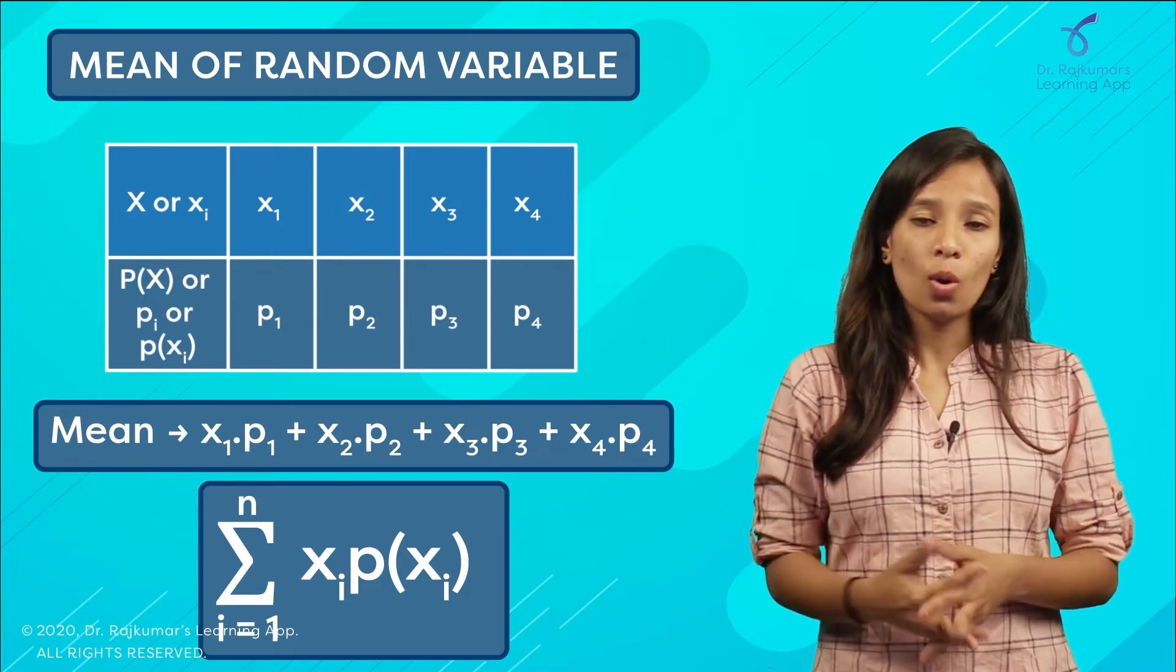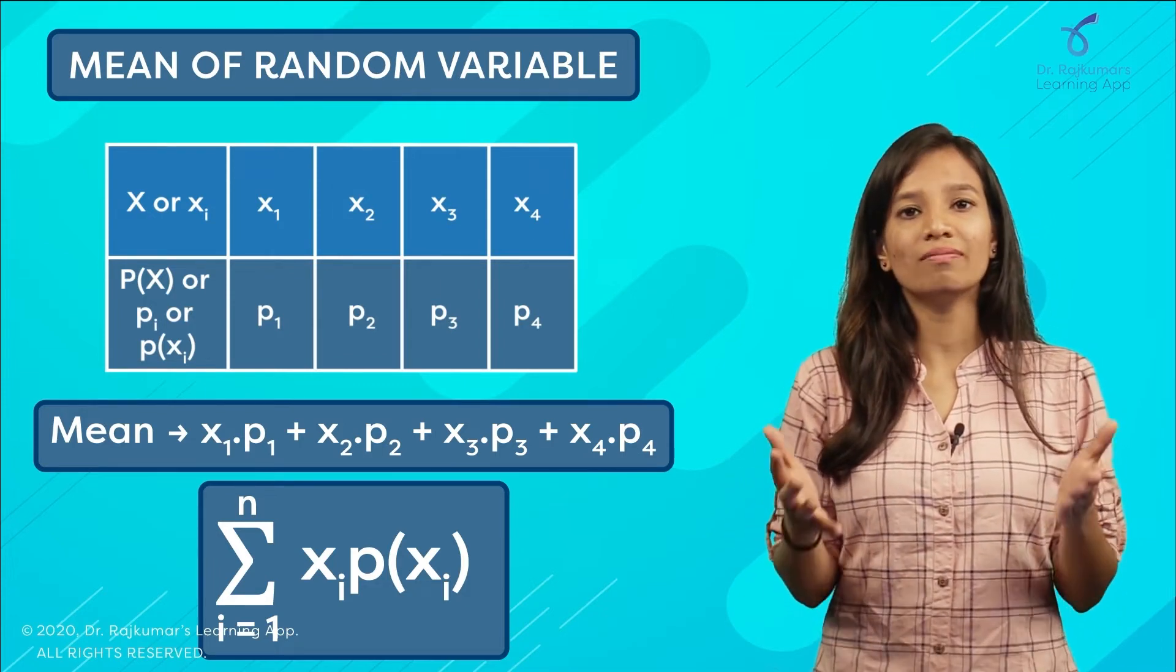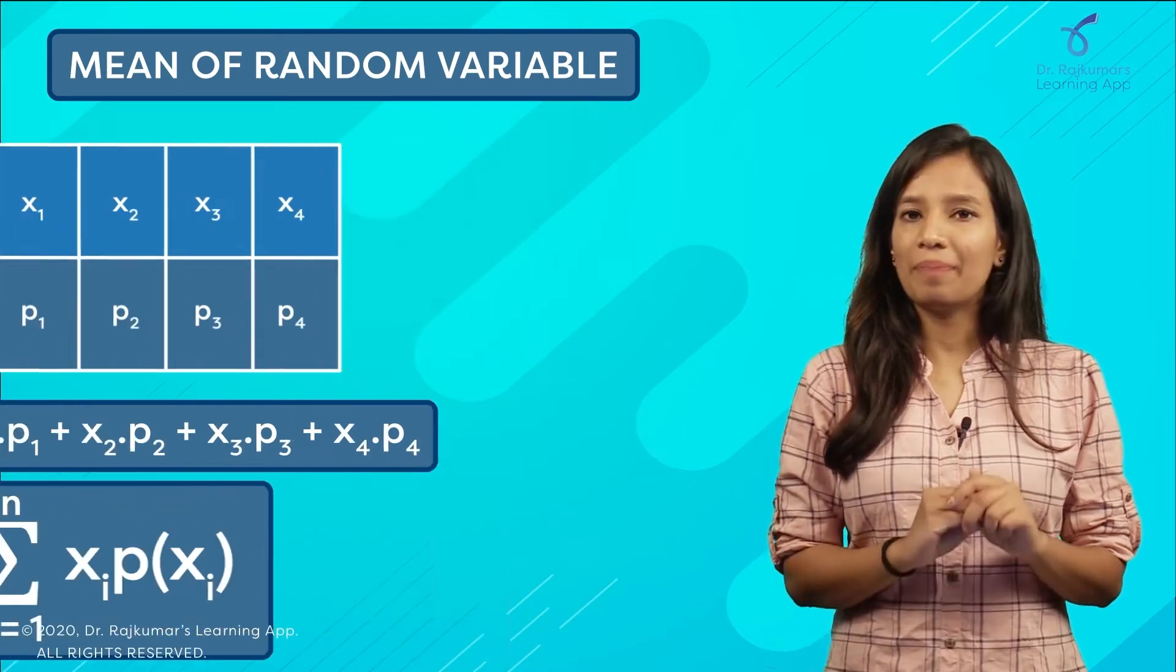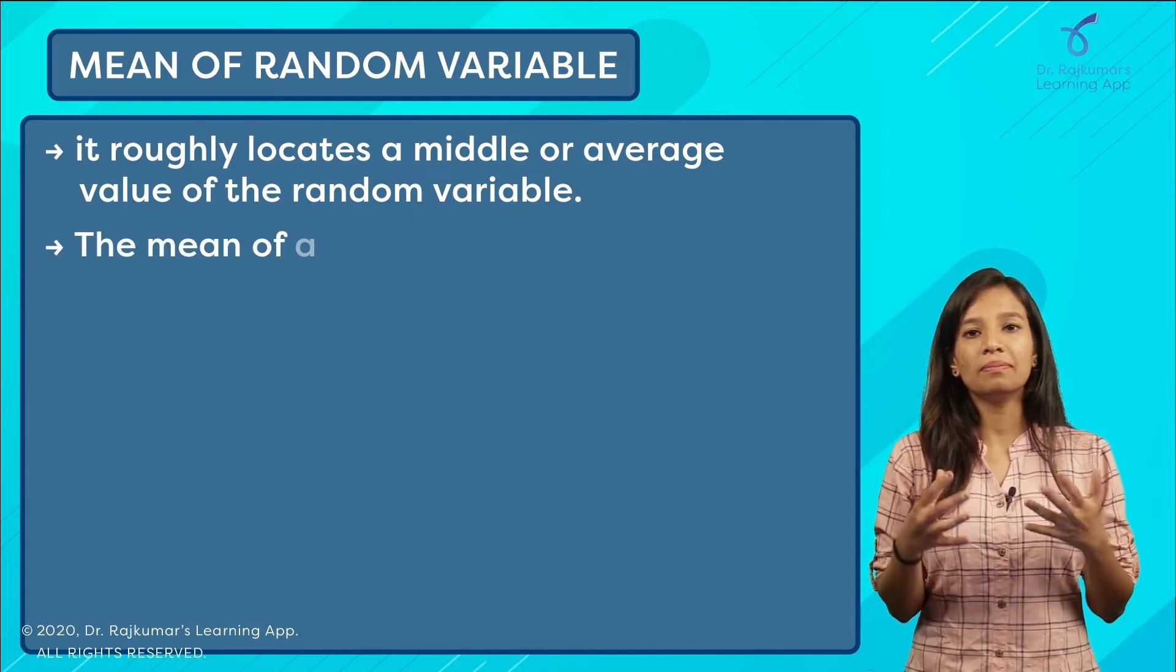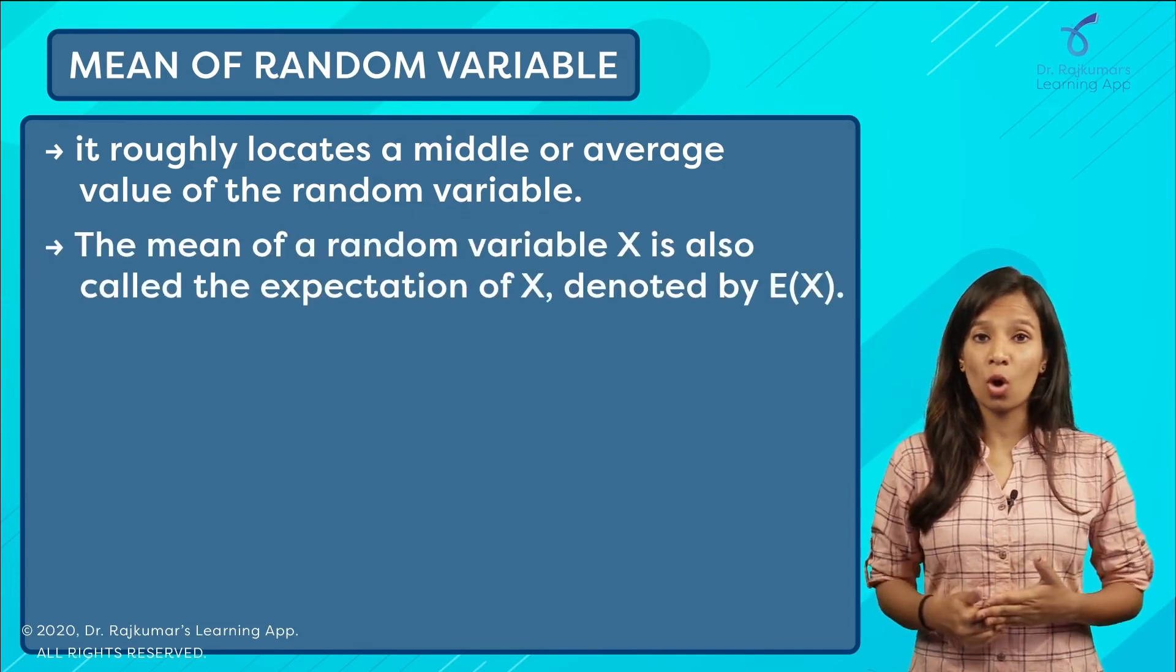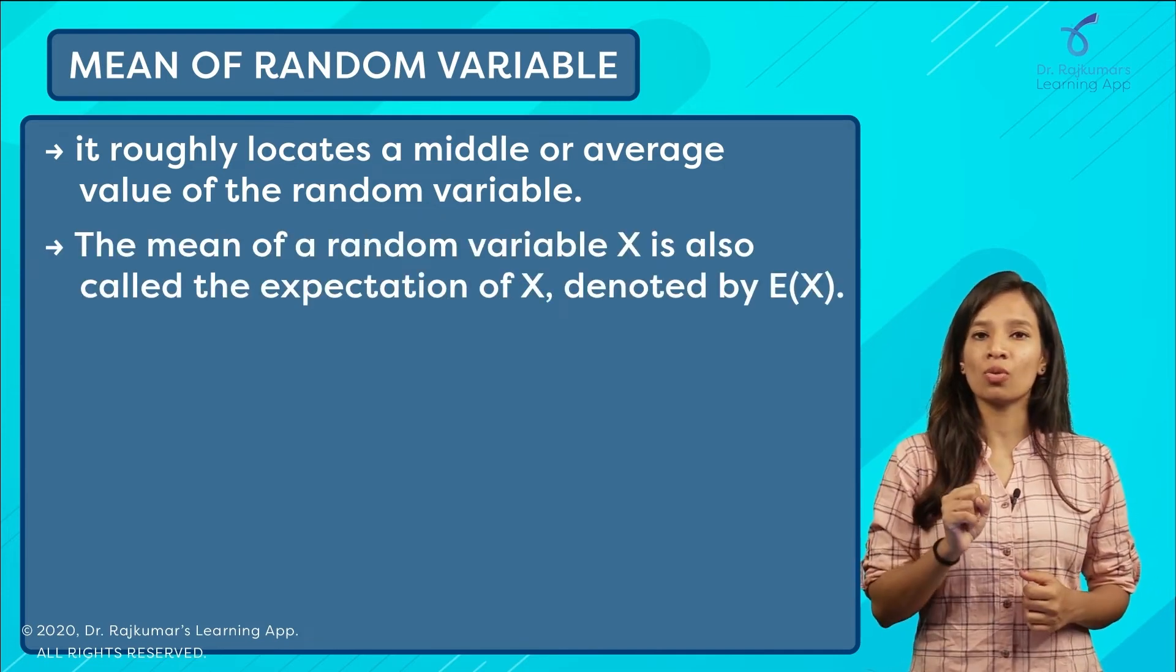It basically locates the middle value, or you can say the average value. This mean of a random variable is also called the expectation of the random variable.